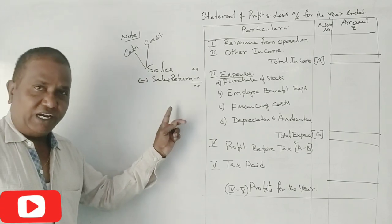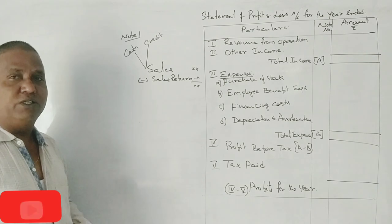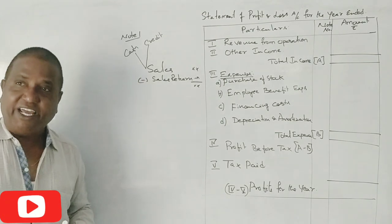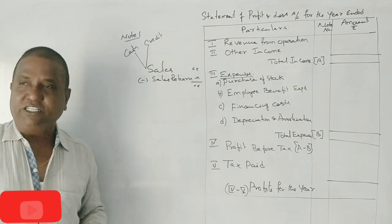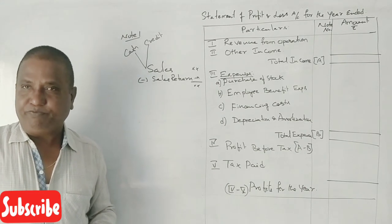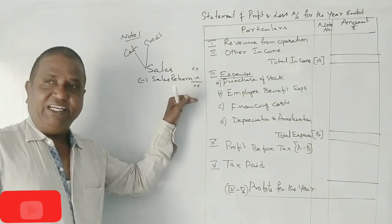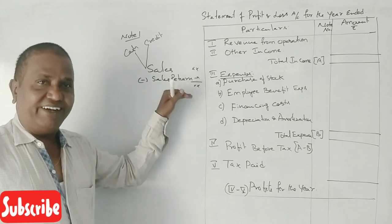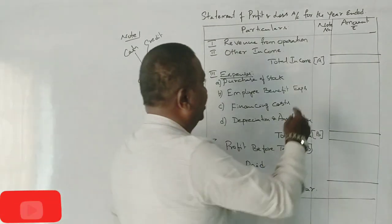Credit Sales — 1 Lakh. Suppose the problem includes Sales Returns, also called Return Inwards. Sales Returns — 1 Lakh. So Revenue from Operations is calculated accordingly.